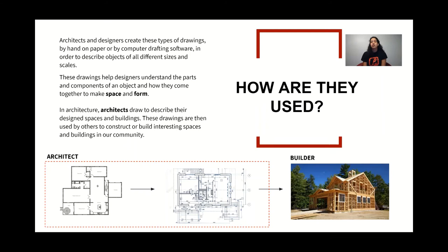In architecture, architects draw to describe their design spaces and buildings. These drawings are developed to a point and then given to other parties and people to build from. As you can see in the images below, the architect produces plans and layers on additional information so that a builder can build the building accurately. In other words, architects do not build buildings, but they design and draw buildings so that others can build them.